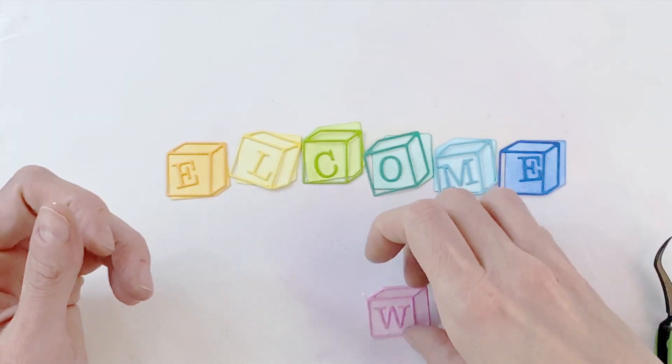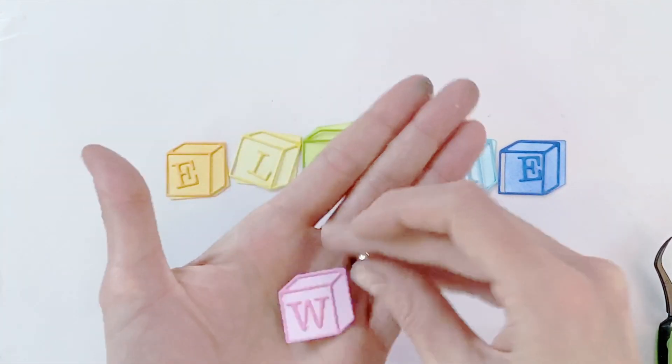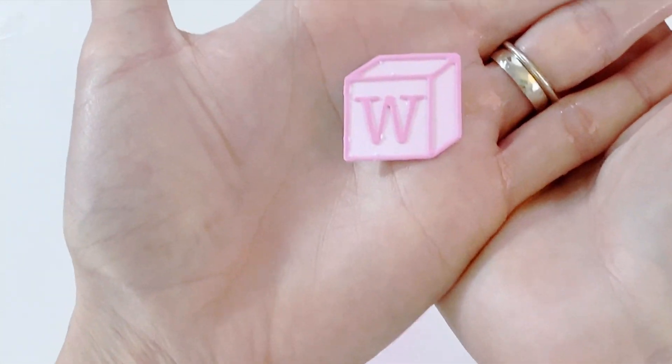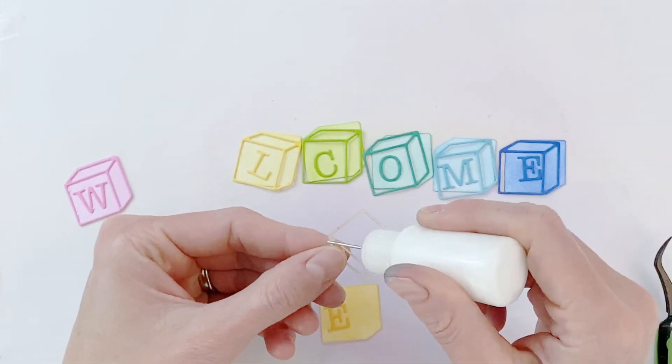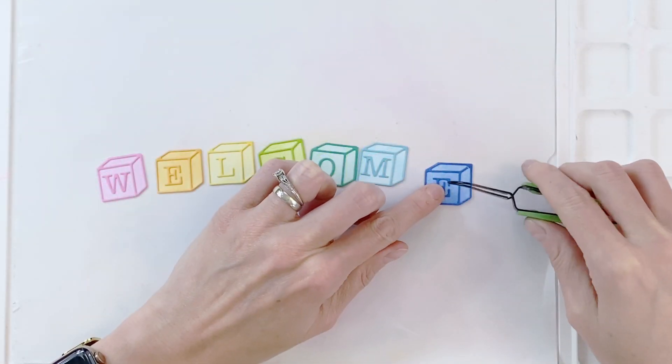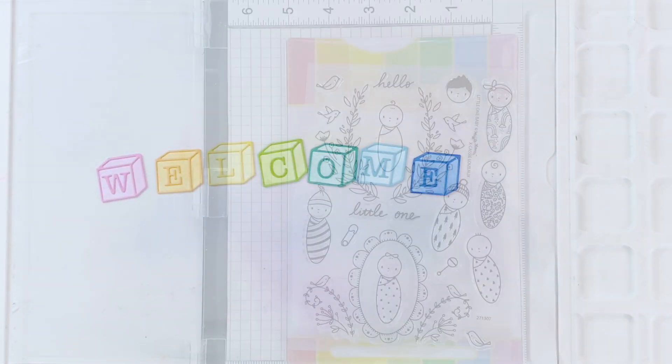So if I do get any glue kind of squishing out from the edges, it won't be as visible as like a shiny glue. So definitely try to use a matte glue as well just to make sure it doesn't look messy. So it looks nice and neat. So I just finished gluing that W block, my first block. I'm now going to repeat this process for all my blocks till I have them all adhered together and then I'll set those aside.